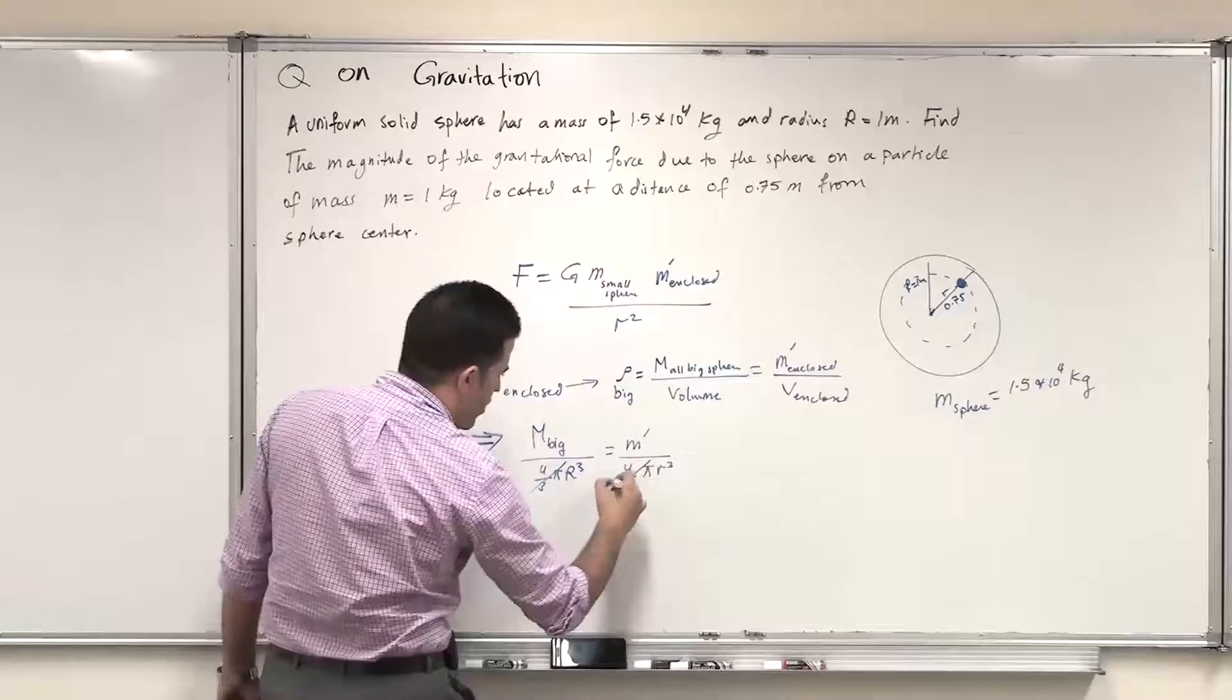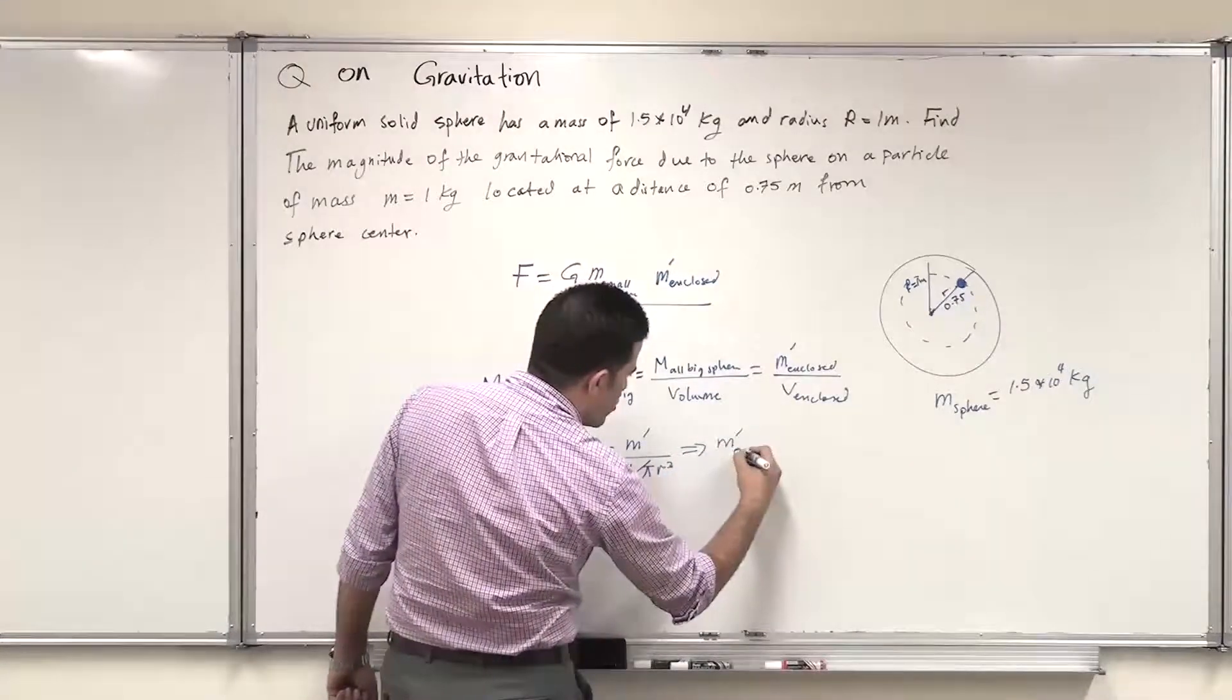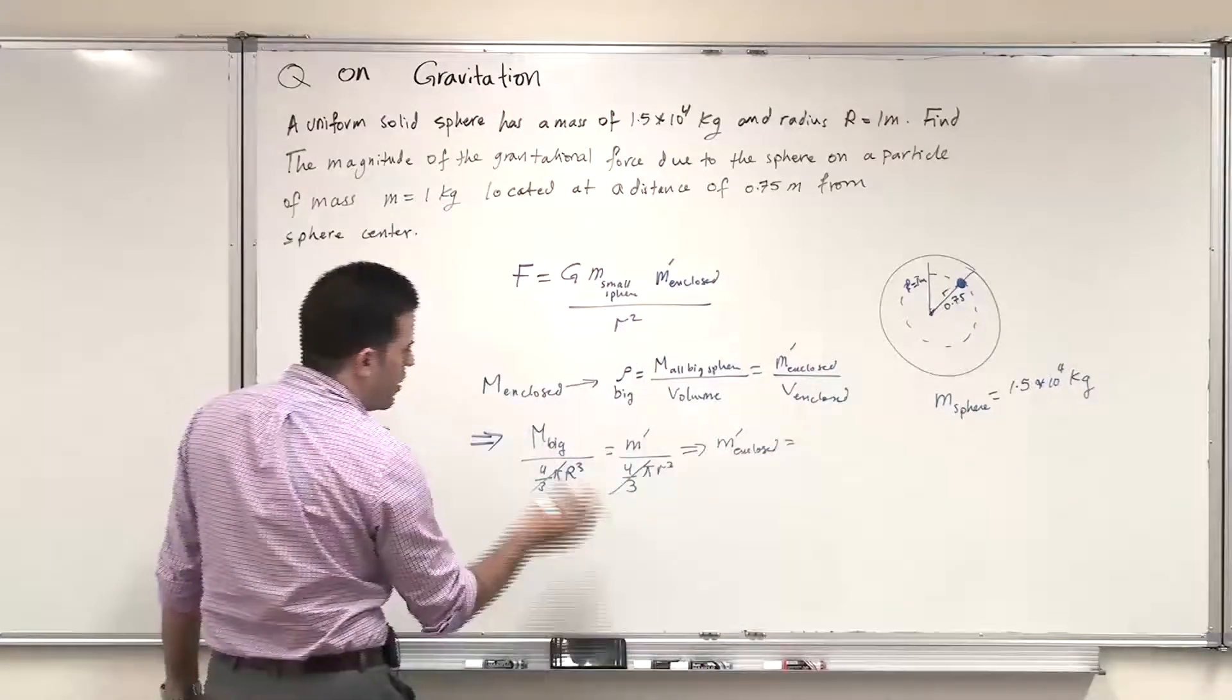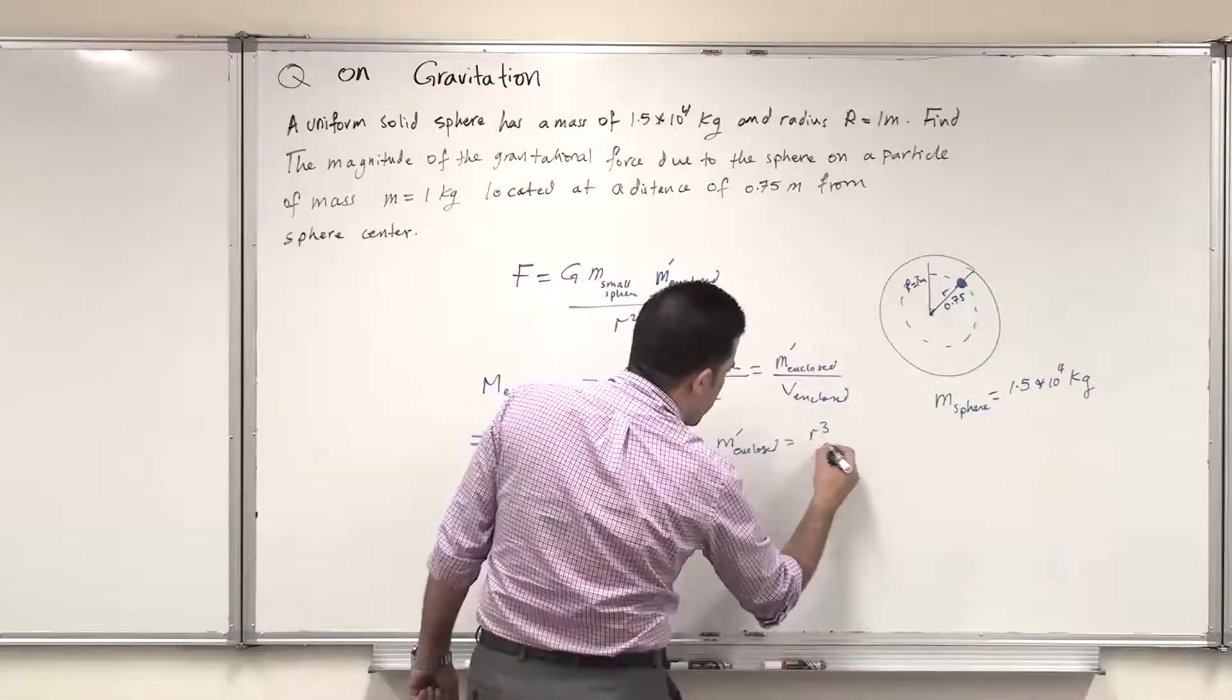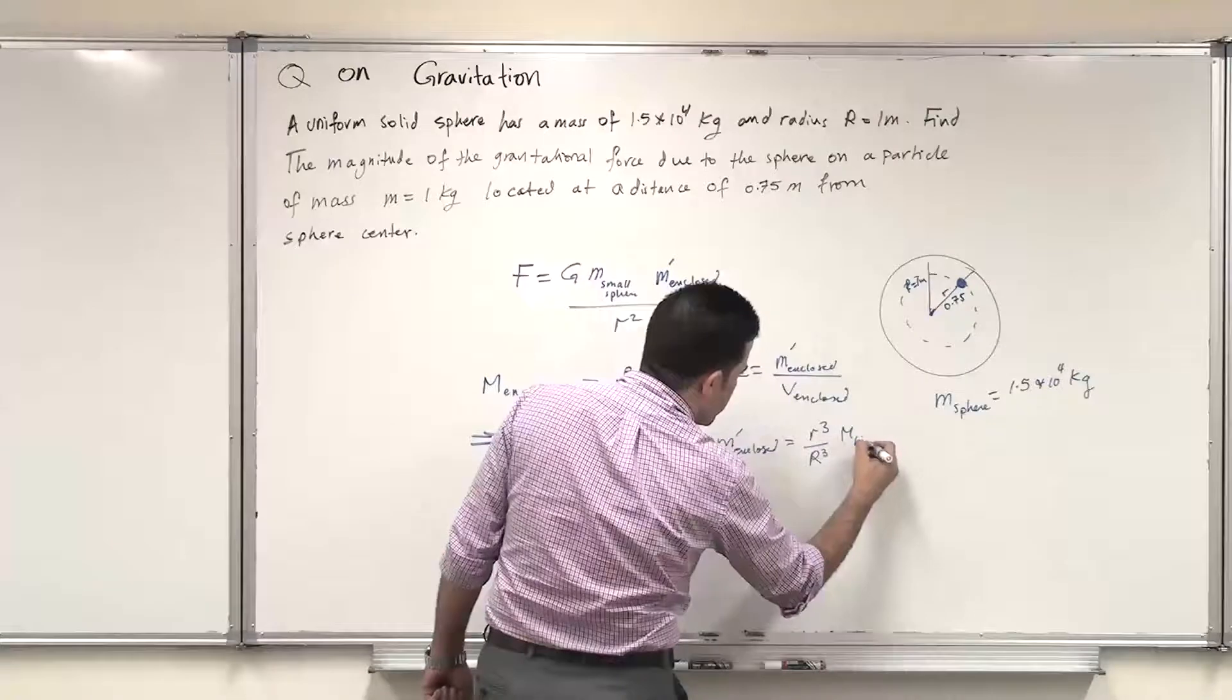Now this will yield, 4/3 π will cancel with 4/3 π. This yields that m prime enclosed, now given in terms of the big mass, is r^3 over R^3 times the mass of the big sphere.